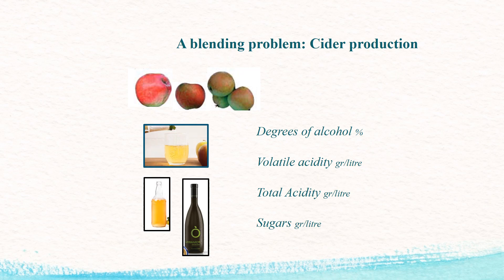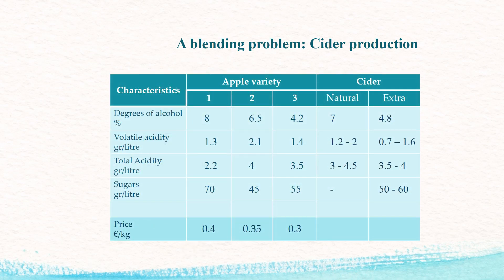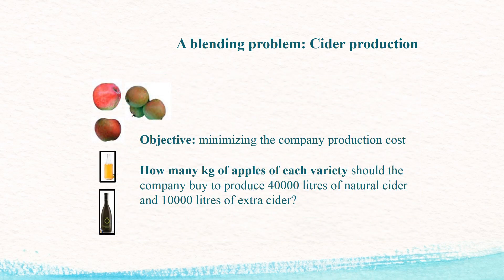The characteristics of cider depend on the apple varieties used. Important features of cider are degree of alcohol, acidity, and sugars. This table shows the price and the characteristics of the apple varieties, as well as specifications of the cider products. The degree of acidity of the cider must be within the range shown in the table, as must the sugars in the case of extra cider. The objective is to minimize production cost — specifically, how many kilograms of apples of each variety should the company buy to produce 40,000 liters of natural cider and 10,000 liters of extra cider?